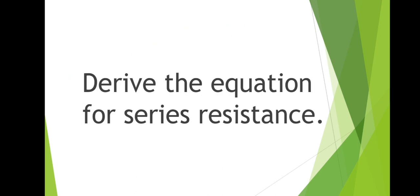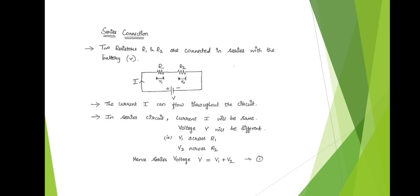We are going to derive the equation for series resistance. We are taking two resistances R1 and R2 connected in series with a battery V. See this — this is a series connection circuit diagram. Two resistors are connected in series, R1 and R2, having voltage V1 and V2 respectively. Current starts to flow as I; that current will be the same throughout the circuit in a series circuit.